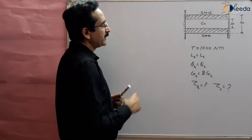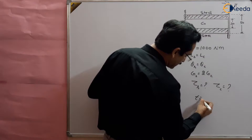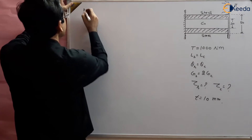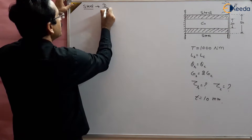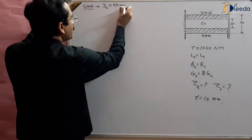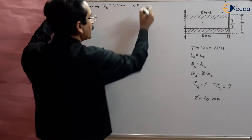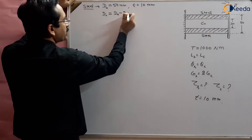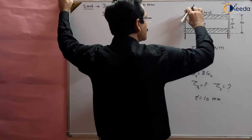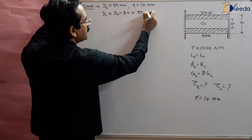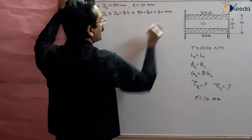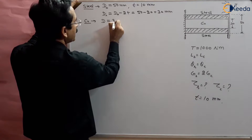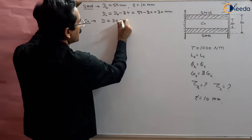In this question the thickness of the steel tube is given as 10 mm and outer diameter is given as 50 mm. The inner diameter of steel is calculated as: inner dia = outer dia minus 2 times thickness = 50 minus 20 = 30 mm. Also, the diameter of the copper rod is also 30 mm, which matches the inner diameter of the steel tube.